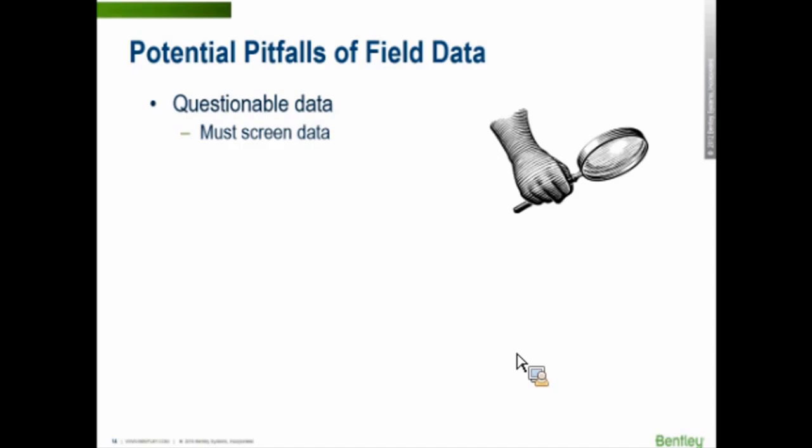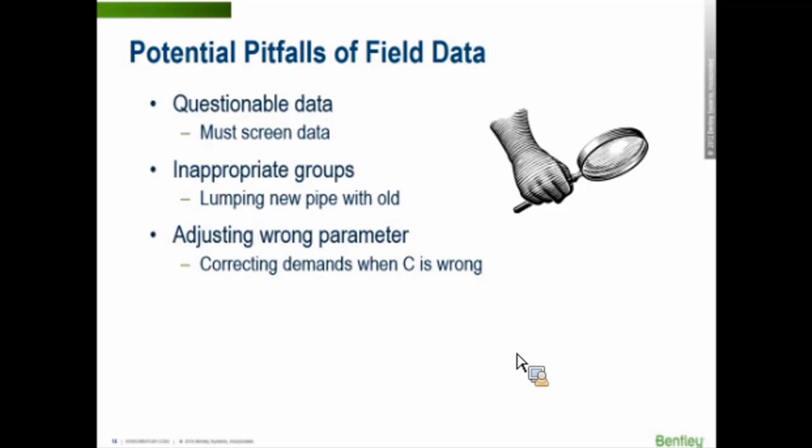It assumes that all the data you give it is good quality. So if you aren't sure of the effect or if it's questionable data, you can choose to run Darwin with and without certain data sets. And this can actually be pretty nice for you to be able to do. Another pitfall is lumping data into the wrong pipes or nodes into the wrong group. Another pitfall in running Darwin Calibrator is you start adjusting the wrong parameter. Maybe you say you want it to correct the C factors when your demands are really off or something. How you would prevent that last one? You could have potentially done some sensitivity analysis and gone through and tried to see what really is the model most sensitive to. Is it demands or is it C factor?